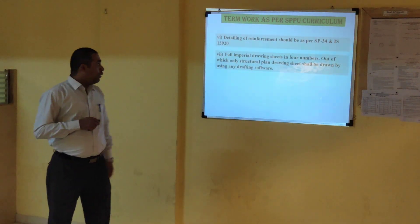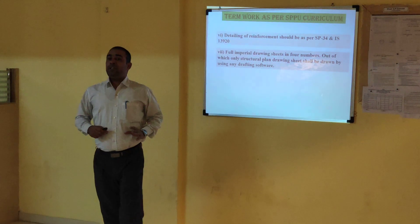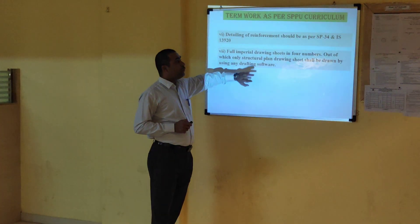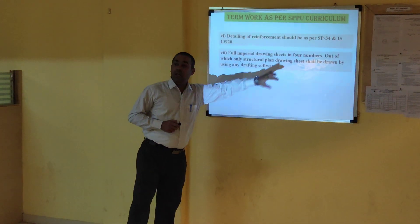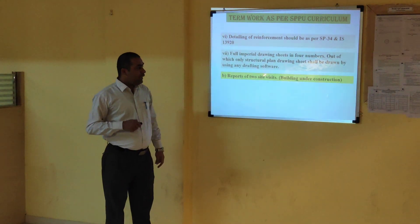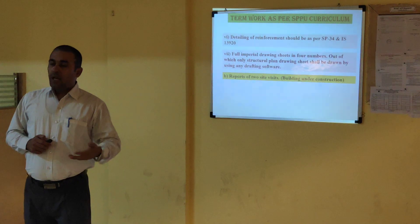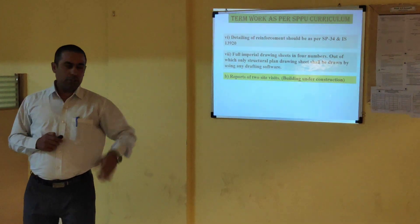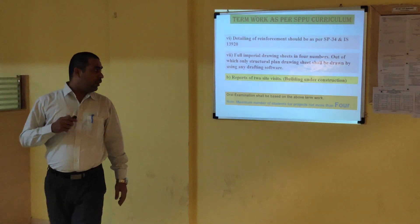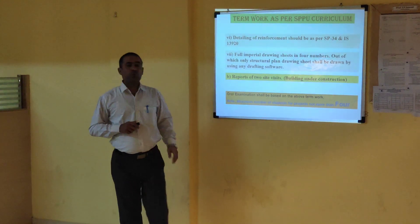We are supposed to draw four full empirical sheets, out of which the first structural plan sheet shall be drawn using drafting software. The remaining sheets must be drawn manually by hand. For site visits, there are two visits — one for substructure (footing) and one for superstructure (slab). It is clearly stated that the number of students in a group should not be more than four.